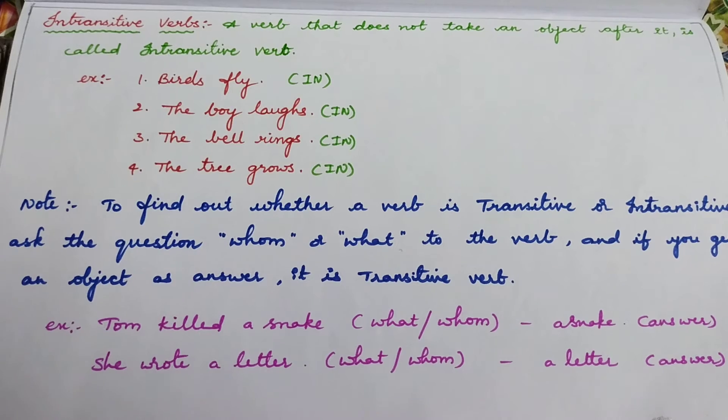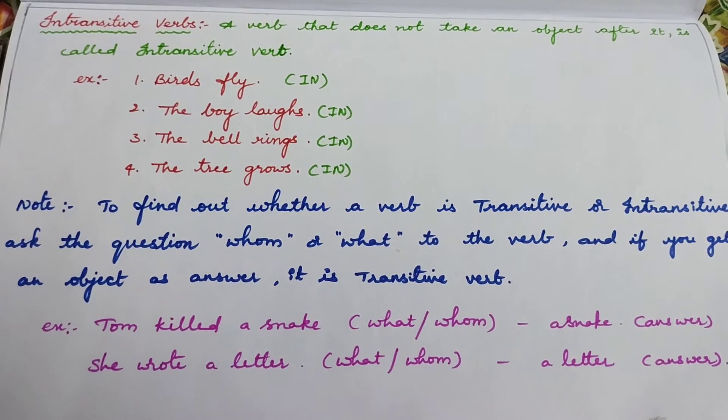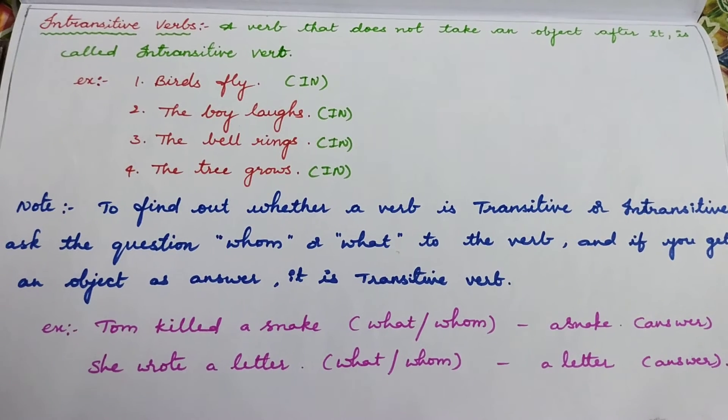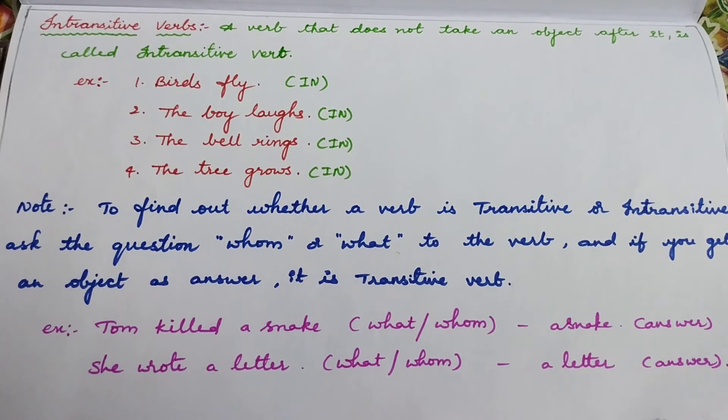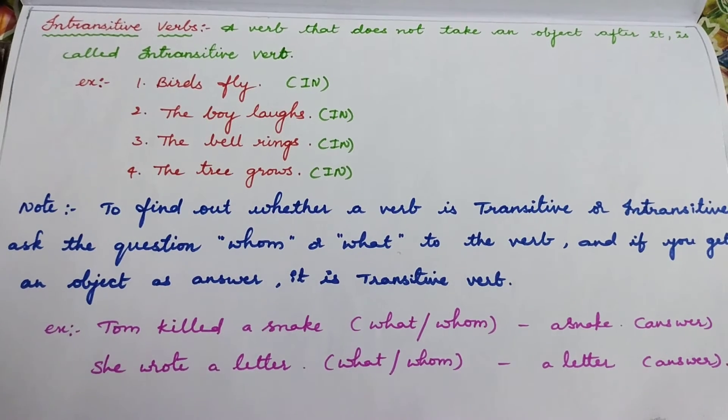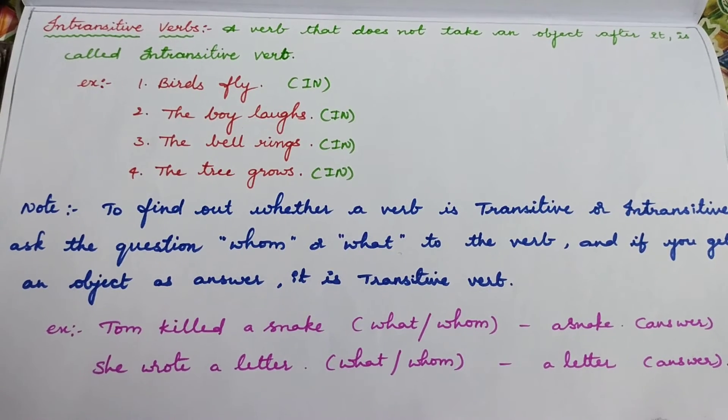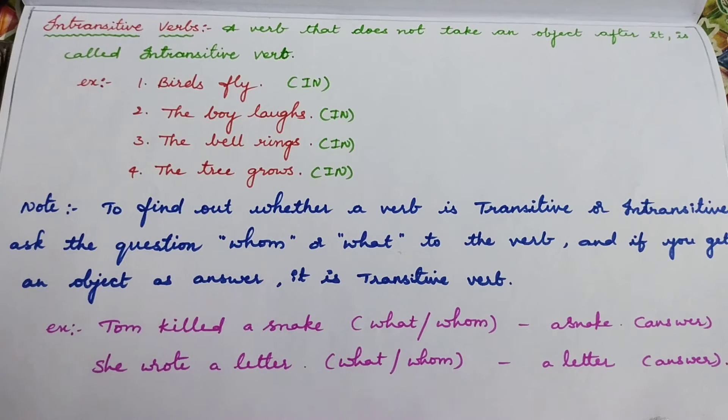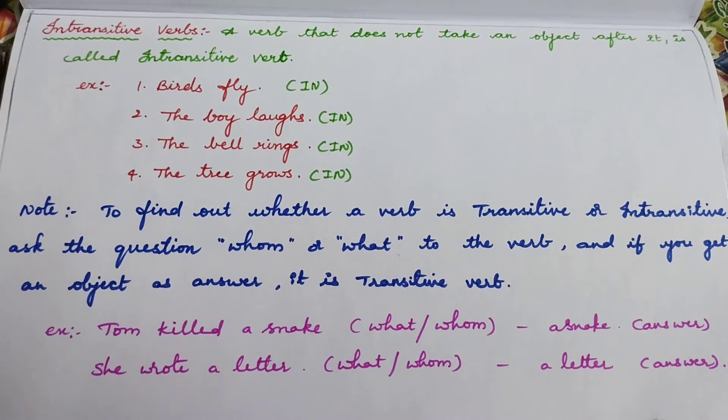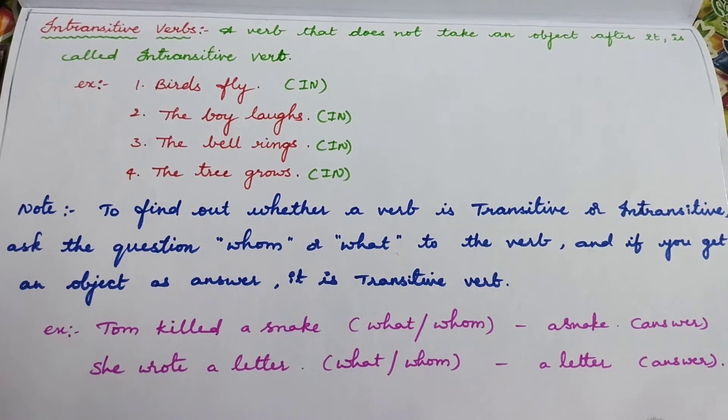A verb that doesn't take an object after it is called intransitive verb. You can't find an object in intransitive verb. For example, birds fly. Where they fly? No explanation will be given. So, no object.